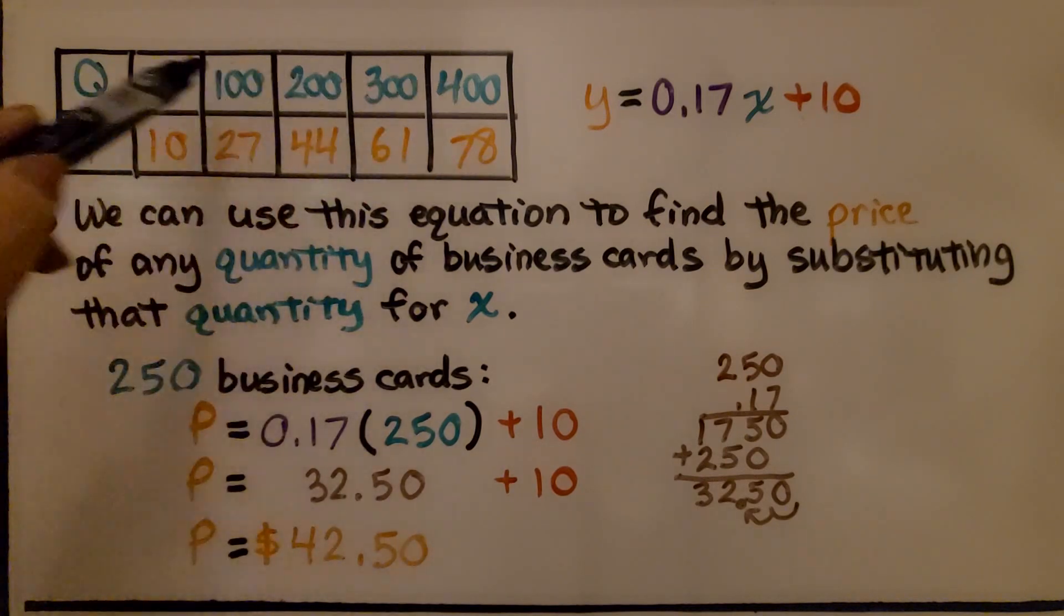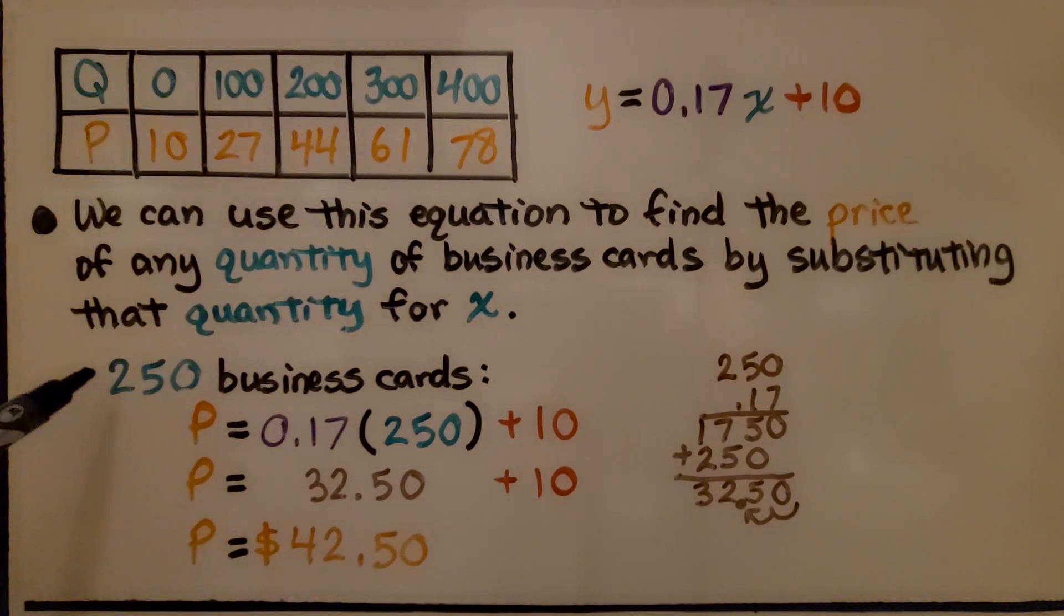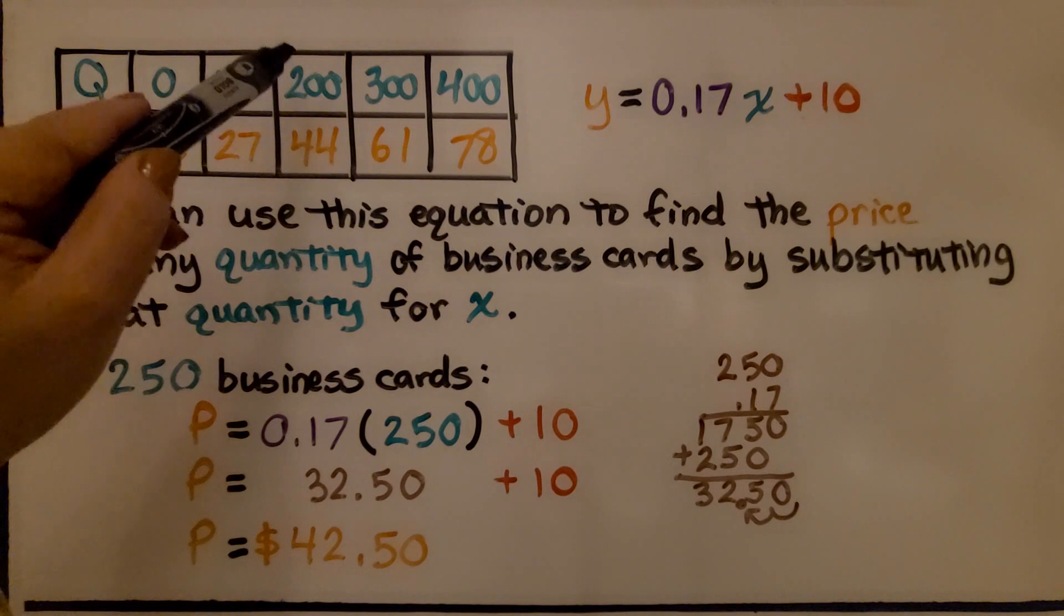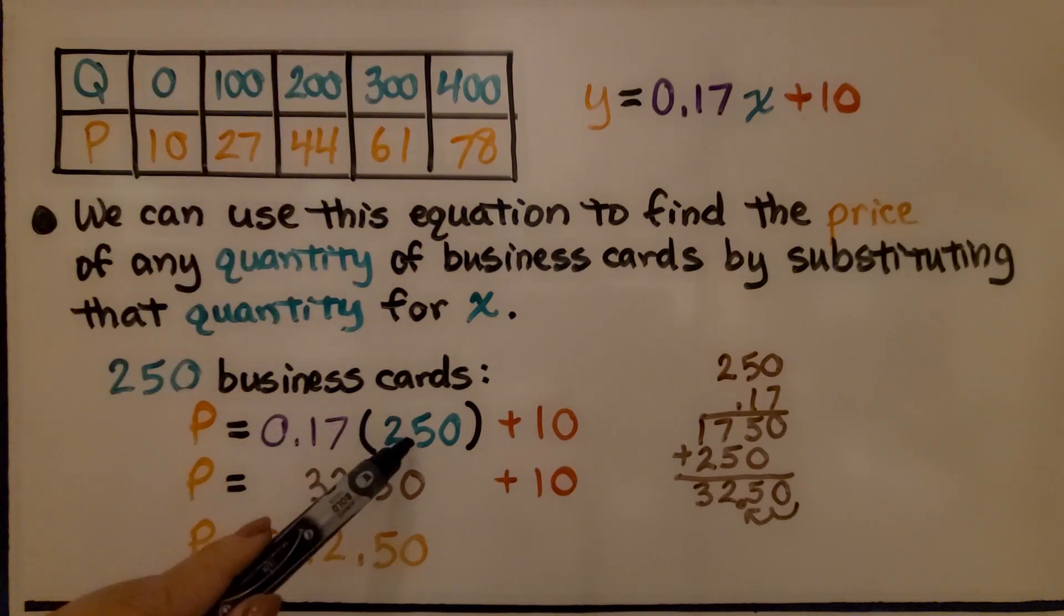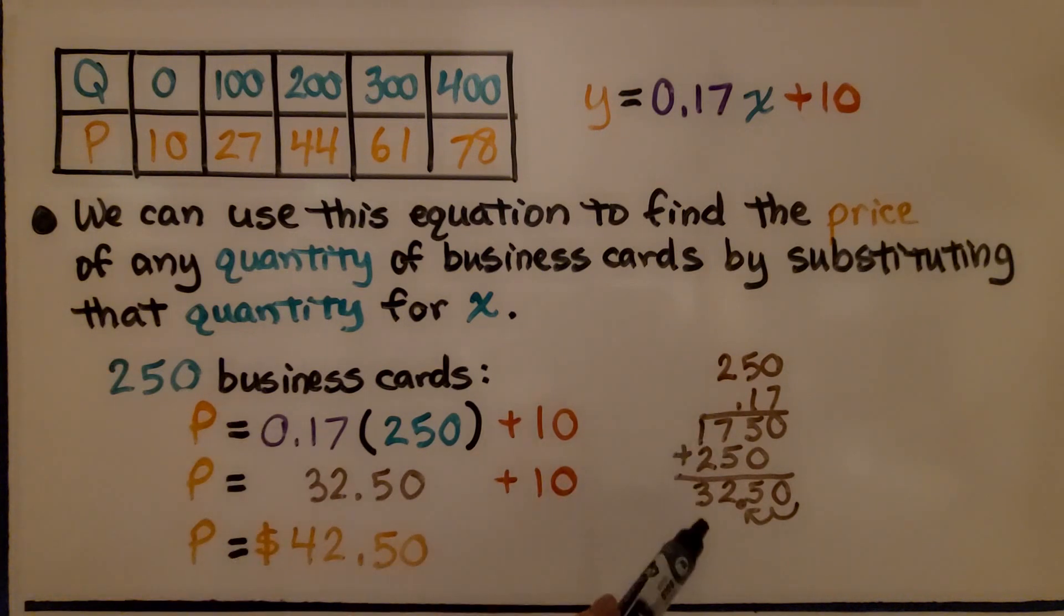We have quantities in the hundreds here. What if we wanted 250 business cards? That would be between this one and this one. We could just substitute 250 for x, do our multiplication, we get $32.50, we add the $10 typesetting fee, and the price for 250 business cards would be $42.50. We could put in any quantity substituted into the equation to find the price.